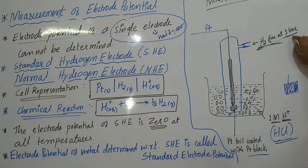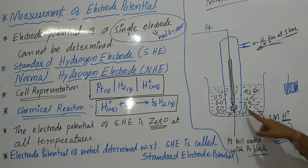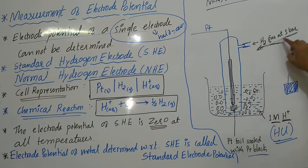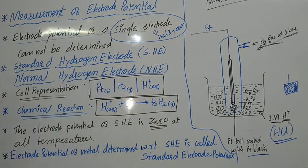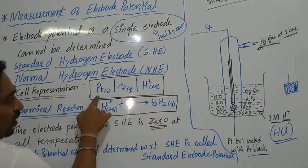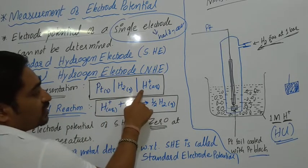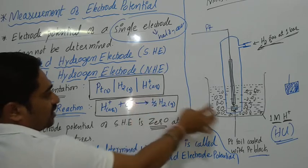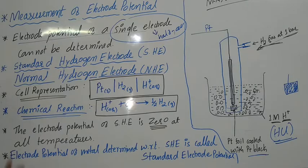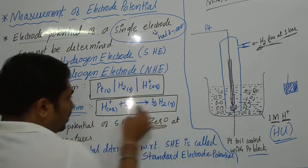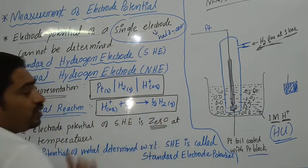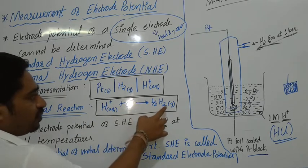The concentration of the electrolyte is unity and the hydrogen gas is blown in at constant pressure of one bar. The concentration of the solution is one molar. The electrolyte contains H⁺ ions. The chemical reaction taking place at this electrode is: H⁺ ions from the solution take up an electron and give ½H₂ — that is, H⁺ + e⁻ → ½H₂.